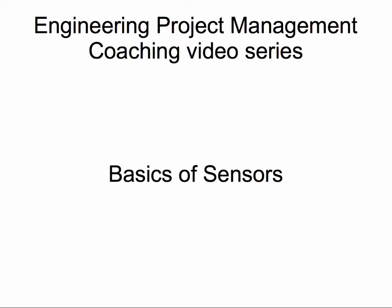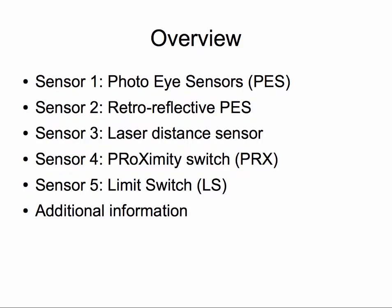There has not been any need for other types of sensors in my application so far. My goal is for you to understand these 5 sensors and be able to select the best one for your application. I also want you to be able to converse with technicians about sensors. These 5 sensors are photo-eye sensors, retro-reflective photo-eye sensors, laser distance sensors, proximity switches, and limit switches. I will also cover some additional information on sensors in general at the end. So let's move on to the first sensor.